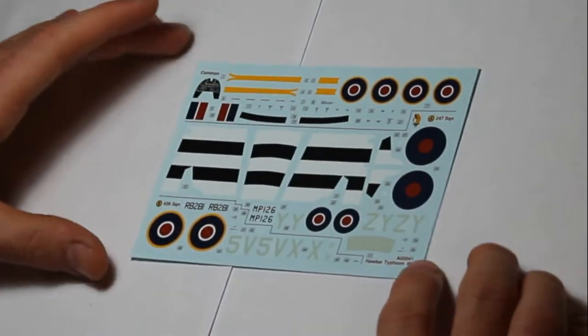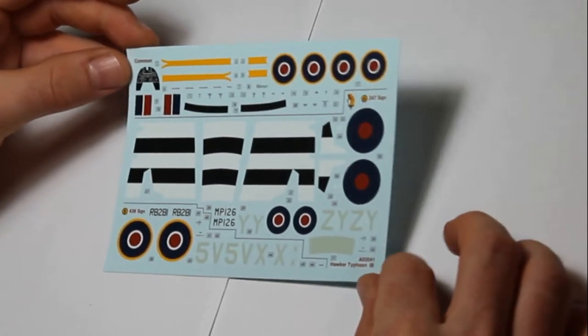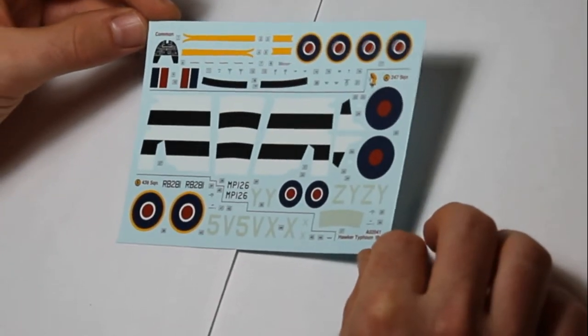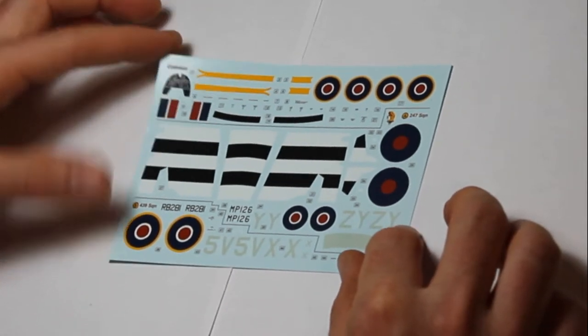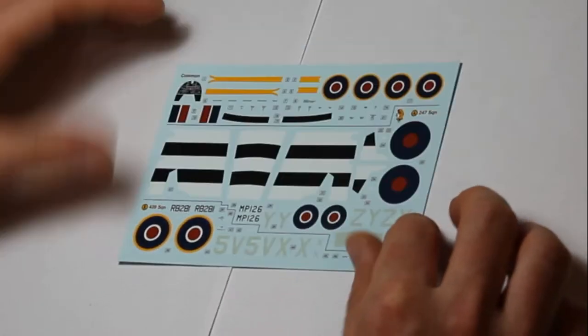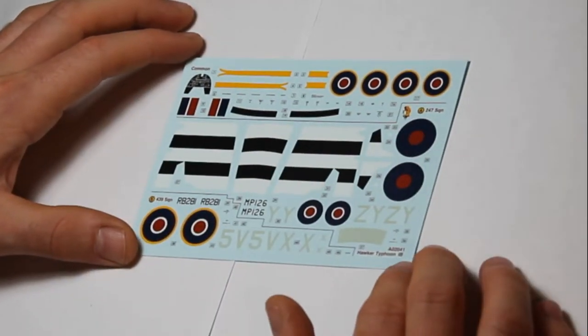So, that's the colour markings in the instructions sheet. Then we'll move on to the decals, which are very good, as usual, printed by Cartograph, so there's no problems there. A slightly matte finish, but that never causes me a problem, as you're usually glossing to put them down, and then you gloss over them to start doing your weathering. We've got decals for the instrument panel, which is never really a problem at this scale. All the stenciling markings.